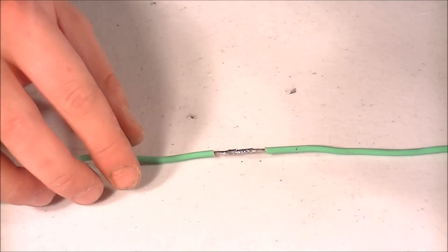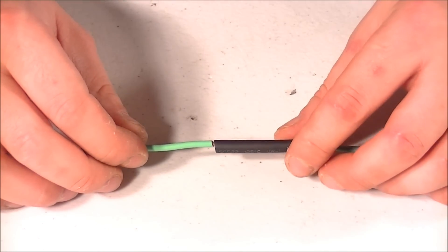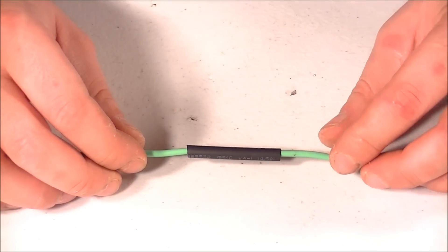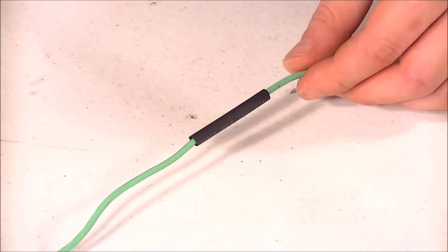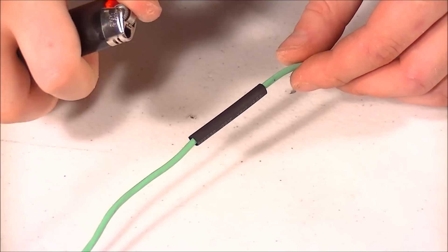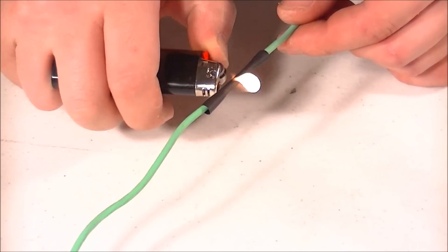Now that your connection is cooled off slide your heat shrink over the connection making sure to overlap both ends of the insulation. I prefer to use a cigarette lighter to activate the heat shrink tubing but you can use a heat gun or even the tip of your soldering iron.